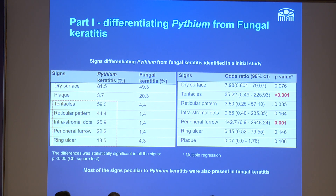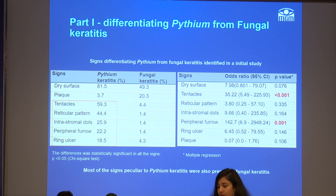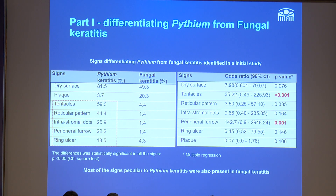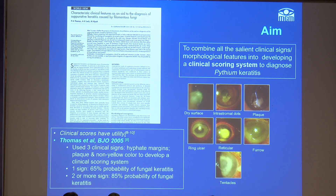In the initial part of this study, and as my previous speaker has also said, certain typical signs like tentacles and reticular pattern are very typical of pythium and we found them to be more associated with pythium keratitis. But these are also present in patients with fungal keratitis, so none of these could be considered as sine qua non for pythium.